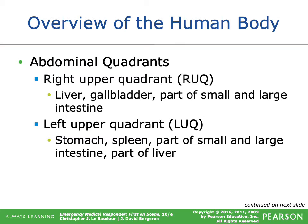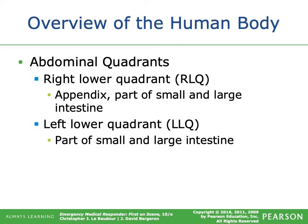The abdomen is split into four different quadrants, always in reference to the patient's perspective. The right upper quadrant includes the liver, gallbladder, and part of the small and large intestine. The left upper quadrant includes the stomach, spleen, part of the large intestine, and also part of the liver. The right lower quadrant contains the appendix and part of the small and large intestine. The left lower quadrant contains part of the small and large intestine.